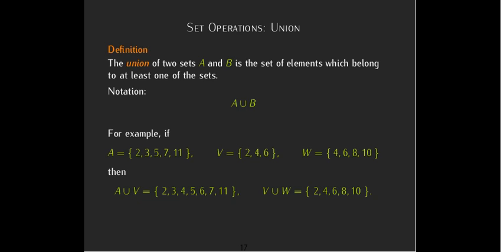So we're going to include everything from A and then the 4 and the 6. We don't write the 2 twice. It's already there so we don't write it again. And then for V union W, it is all of V. And then what else do we get from W? We get an 8 and a 10.